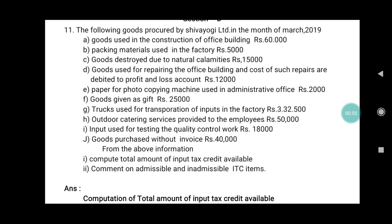Fourth, goods used for repairing the office building, and cost of such repairs are debited to profit and loss account: Rs. 12,000. Fifth, paper for photocopying machine used in administrative office: Rs. 2,000. Sixth, goods given as a gift: Rs. 25,000. Seventh, truck used for transportation of input into factory: Rs. 3,32,500.